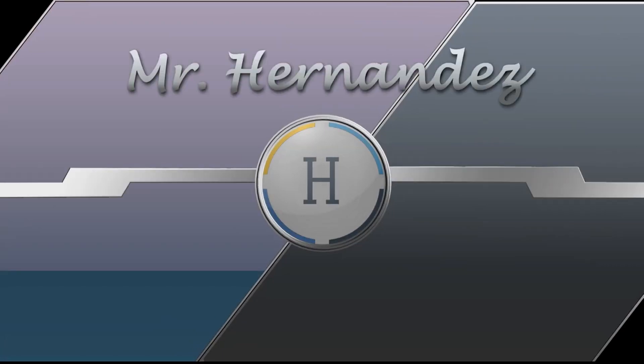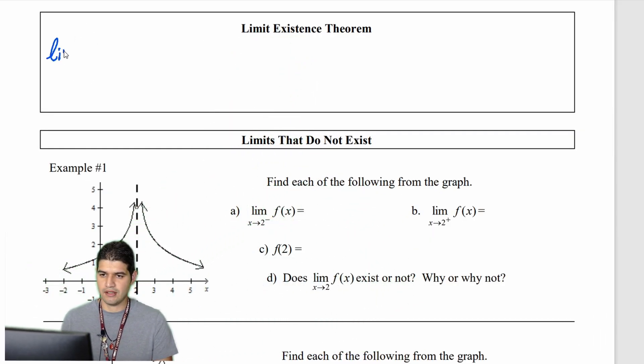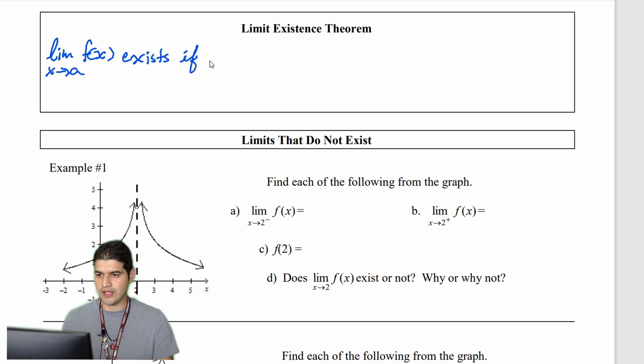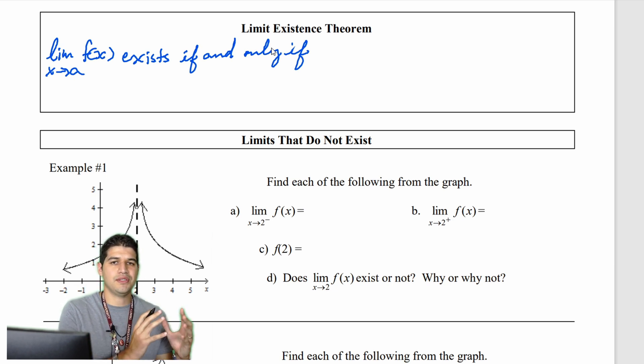Hello everyone, welcome back to this calculus tutorial. Today we're going to be looking at limits, specifically when limits exist or do not exist. We're going to start with the Limit Existence Theorem. The Limit Existence Theorem states that the limit of f(x) as x approaches a exists if and only if the left-hand limit is equivalent to the right-hand limit.